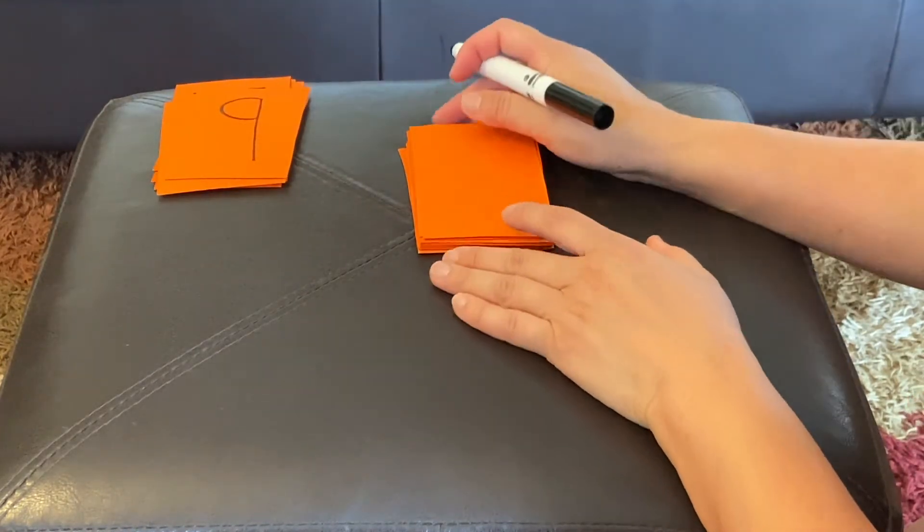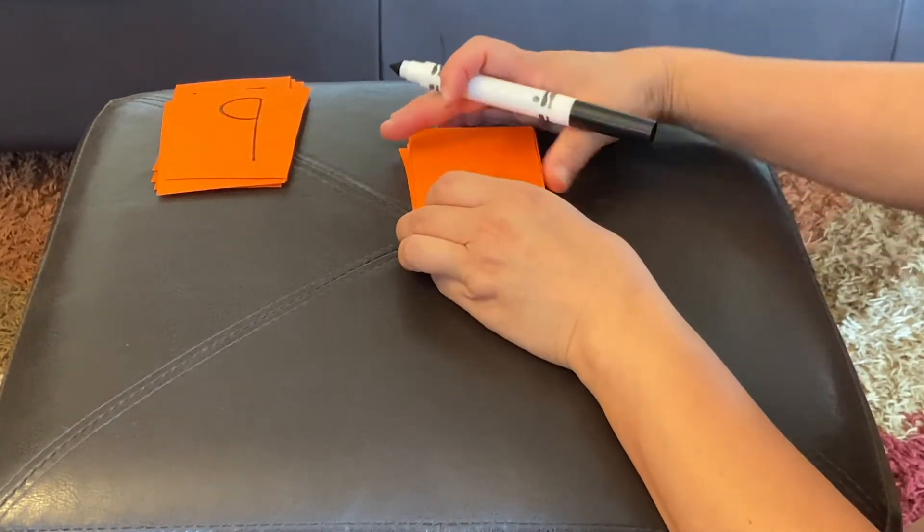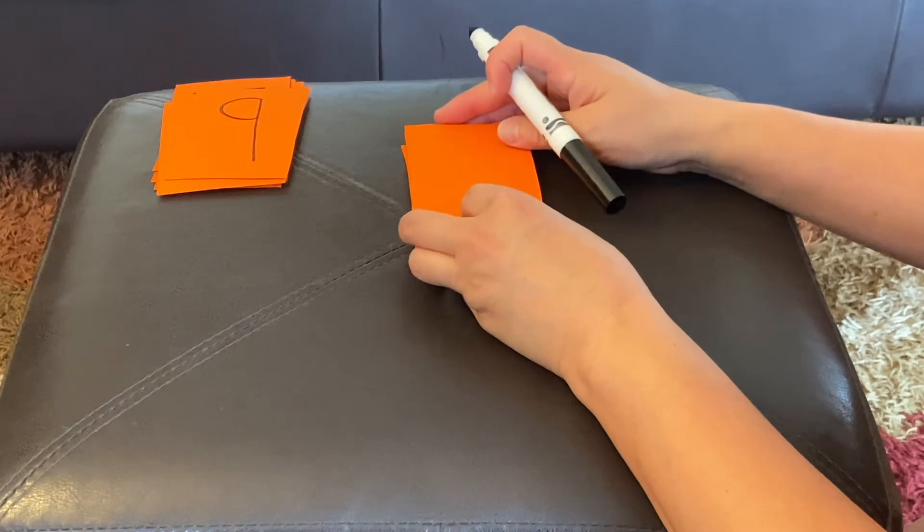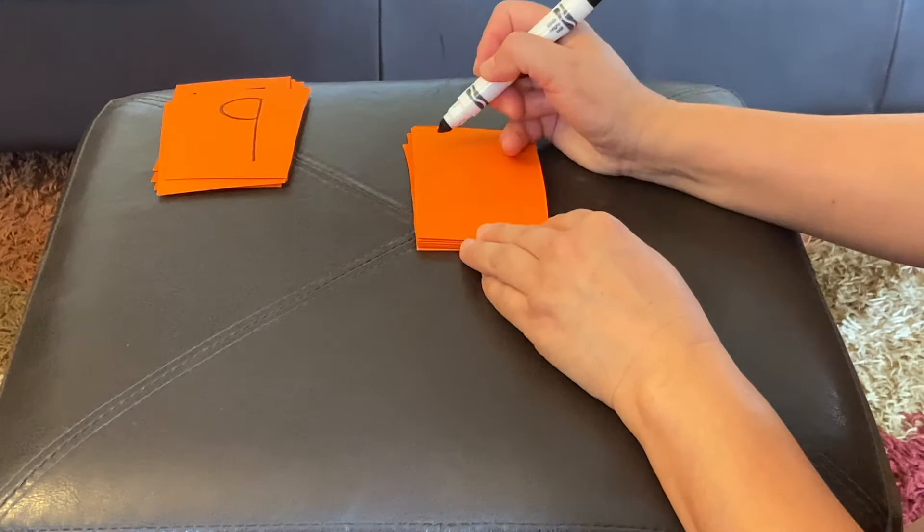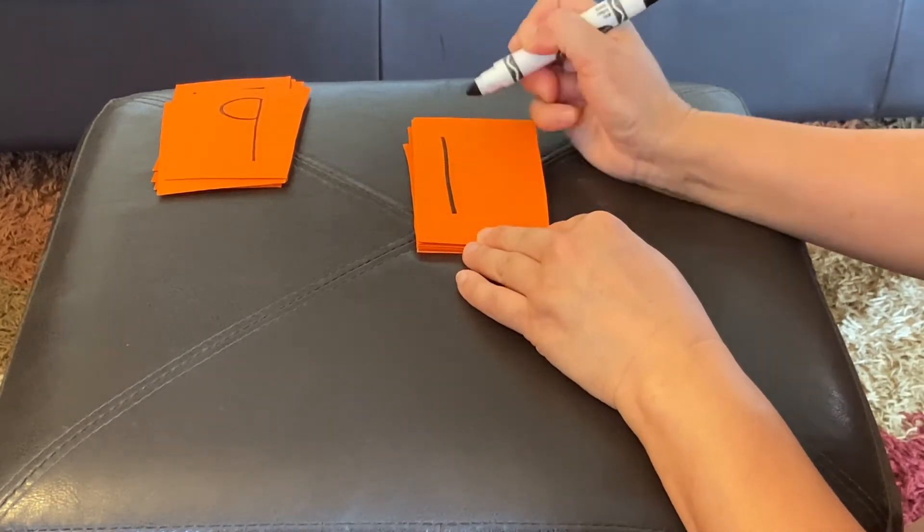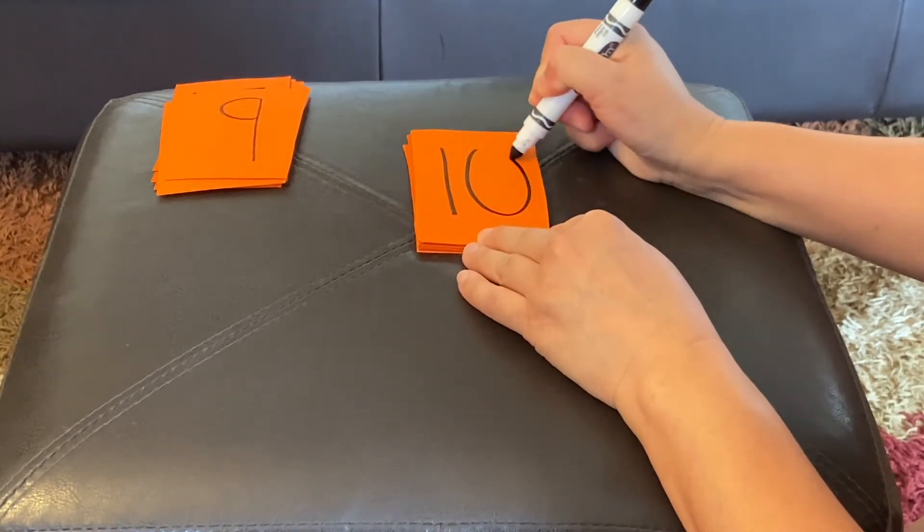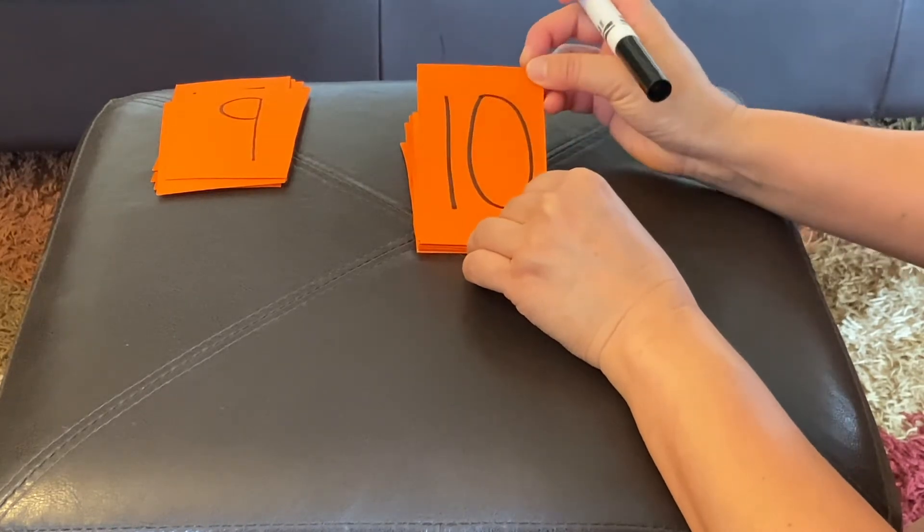Ten. Ten is one whole group of ten, and nothing left over, right? So, one, and a zero, makes ten, our first two-digit number.